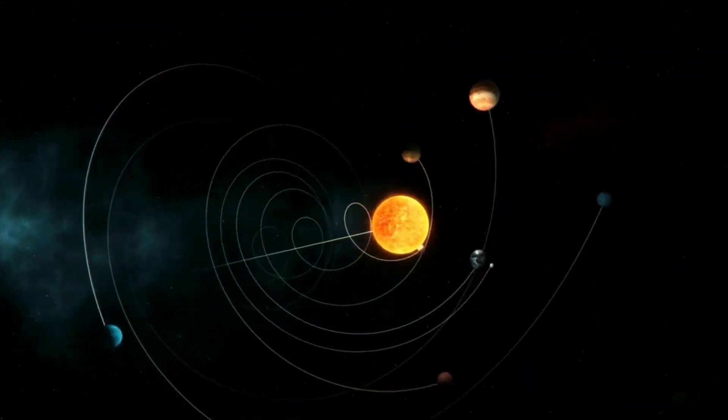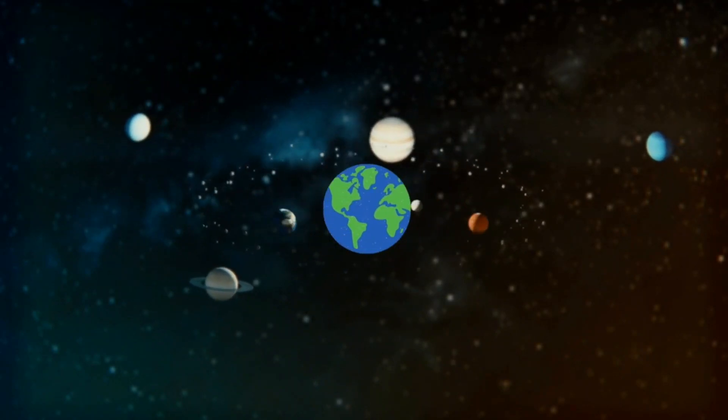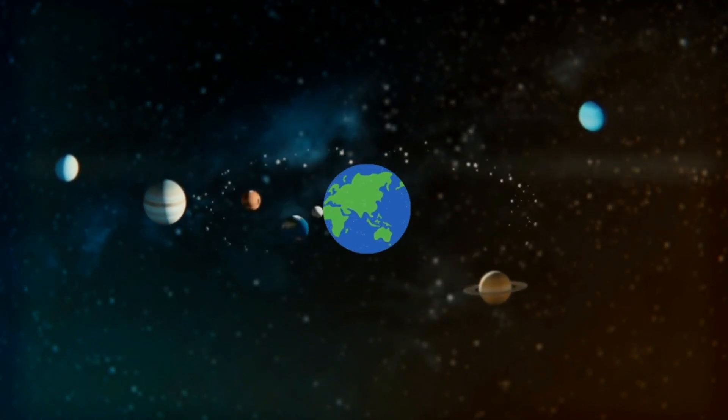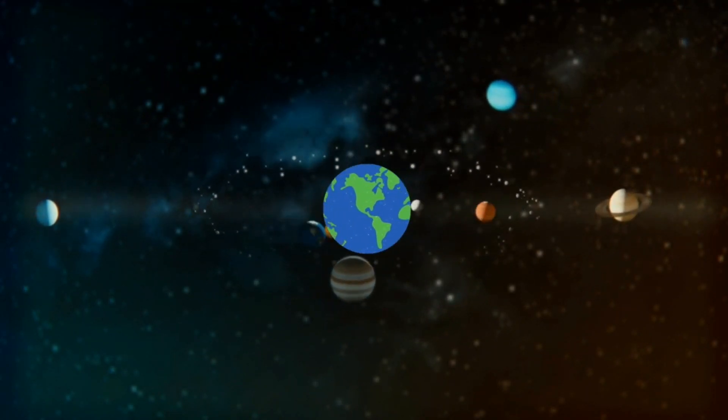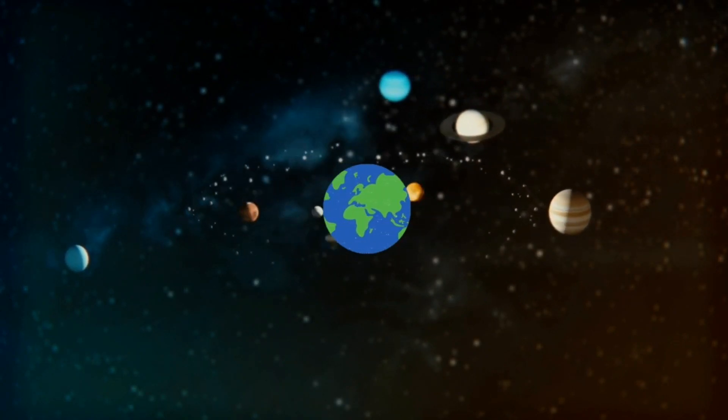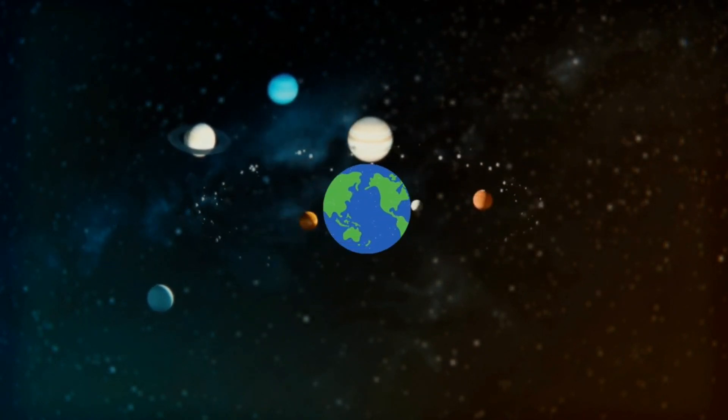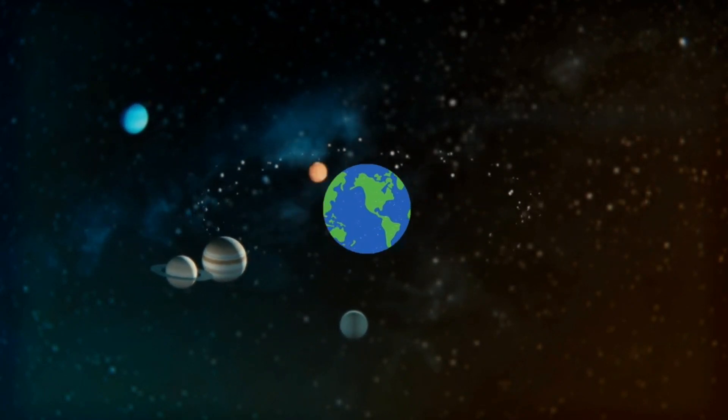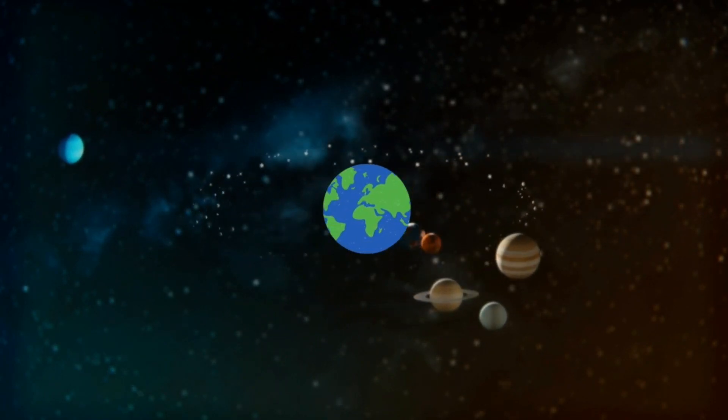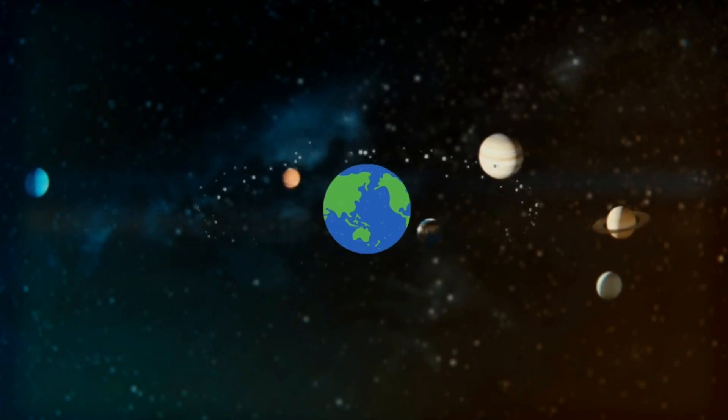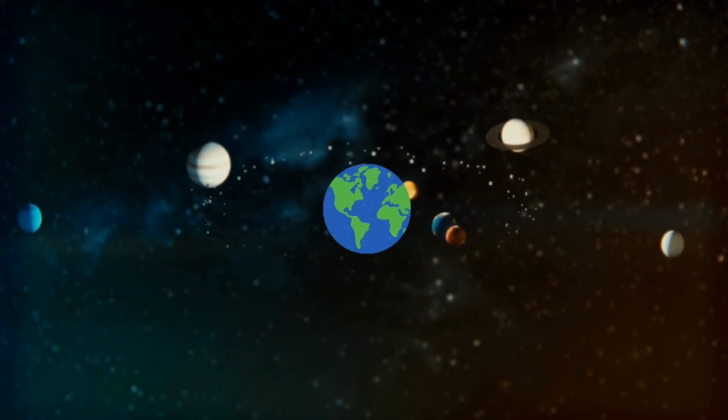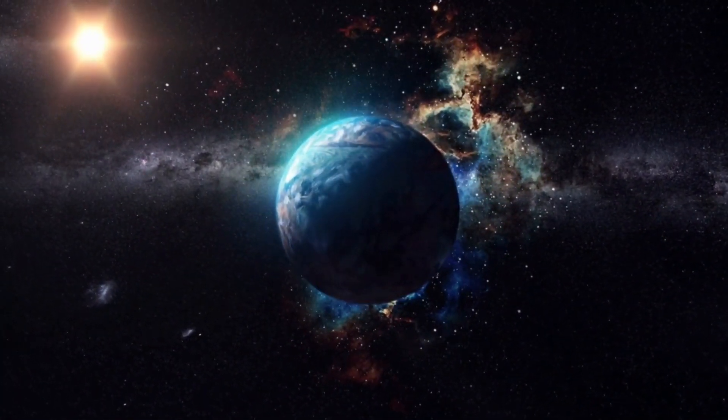In this hypothetical scenario, Earth would become the central gravitational force in the solar system, around which all other planets would revolve. This means the Sun, which currently holds this central role, would now be just another celestial body orbiting Earth. The gravitational pull of Earth would affect the orbits of all the planets. They would need to be reconfigured to maintain a stable arrangement.